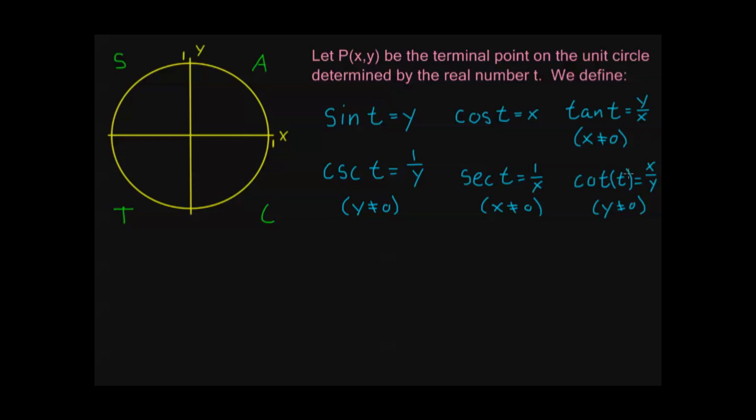Tangent and cotangent are ratios between y and x. So they're going to be positive either when x and y are both positive, or when x and y are both negative. So, in other words, quadrant one and quadrant three.